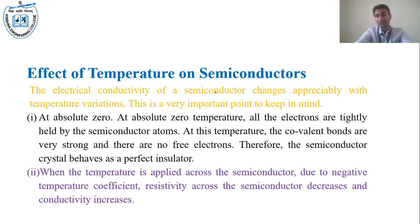Temperature effect: electrical conductivity of semiconductor changes with respect to temperature, specifically mainly in case of extrinsic semiconductor. At absolute zero temperature, all electrons are tightly held with semiconductor atoms. At this temperature, covalent bonds are very strong, attached to each other, and no free electrons are generated. In this case, semiconductor behaves like insulator. But semiconductor has negative temperature coefficient of resistivity.